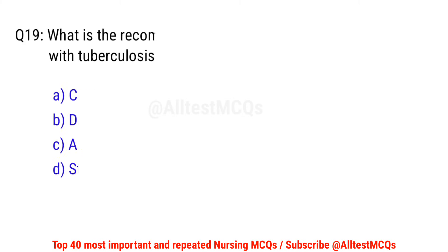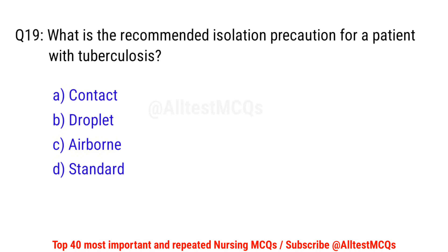Question No. 19: What is the recommended isolation precaution for a patient with tuberculosis? The correct option is C: Airborne.